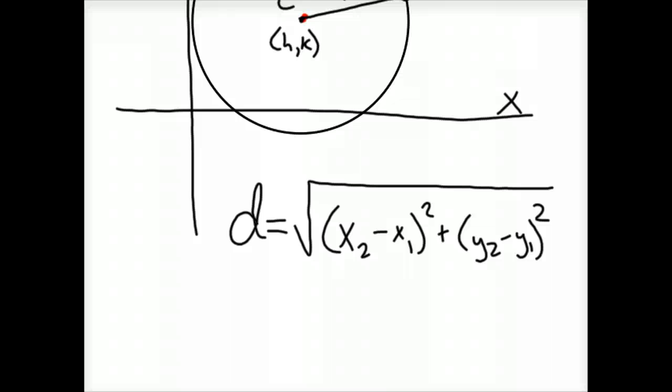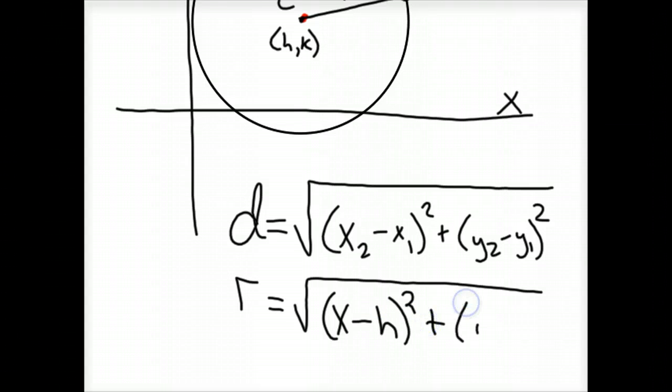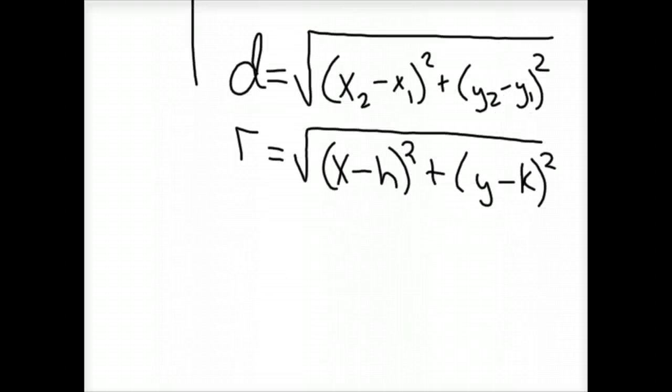And so you'd have R for the distance between the two points, the center and the outside, is the square root of x minus h squared plus y minus k squared. And then if you were solving that, we would want to get rid of the square root on both sides. So I would simply square both sides of the equation. I guess the square root's not on both sides.